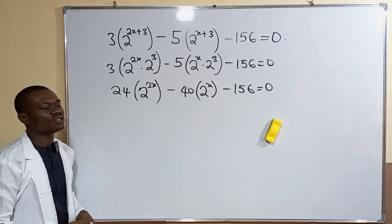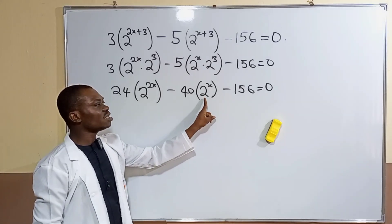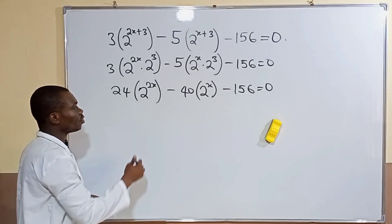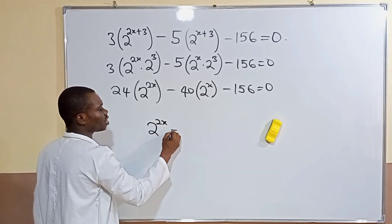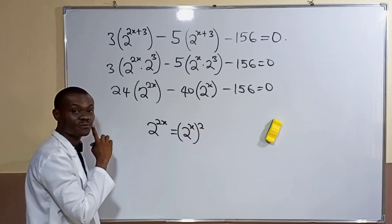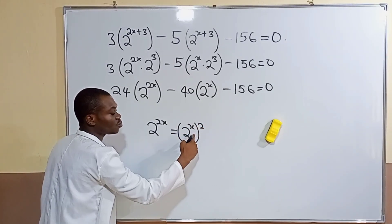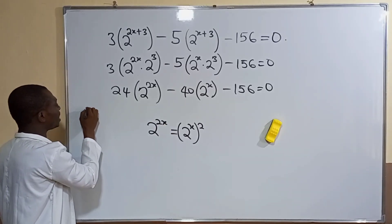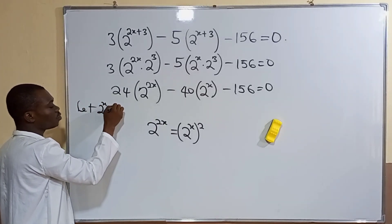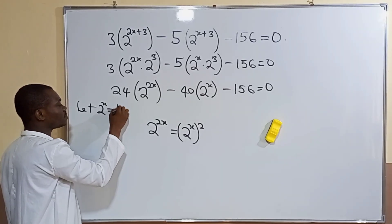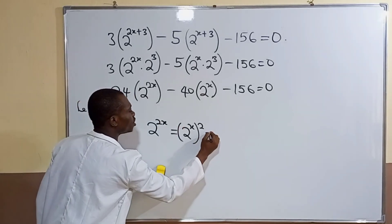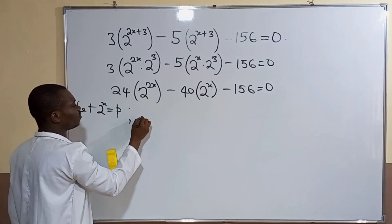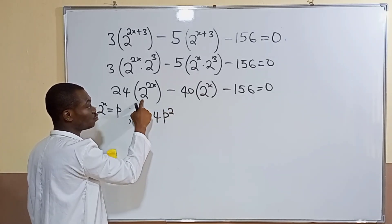We notice that 2 to the power of 2x can be written as (2 to the power of x) squared. So there is a common factor of 2 to the power of x throughout. We let p equal 2 to the power of x. Then 2 to the power of 2x becomes p squared, and 2 to the power of x becomes p. The equation now becomes 24p squared minus 40p minus 156 equals zero.